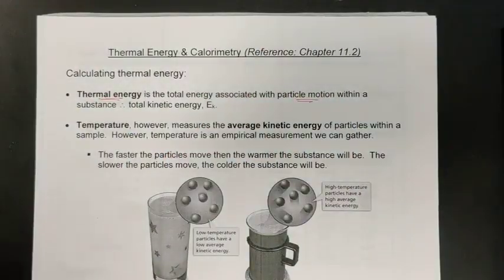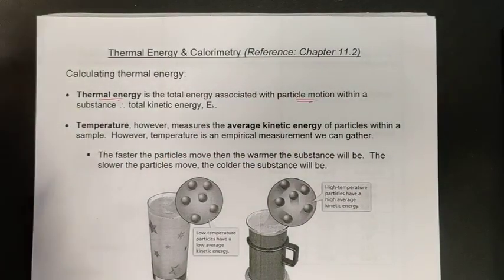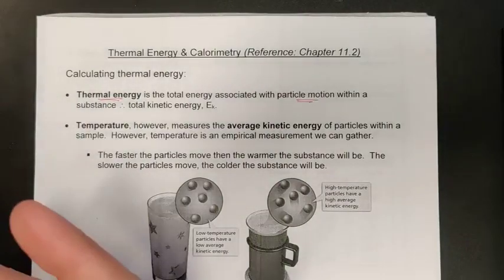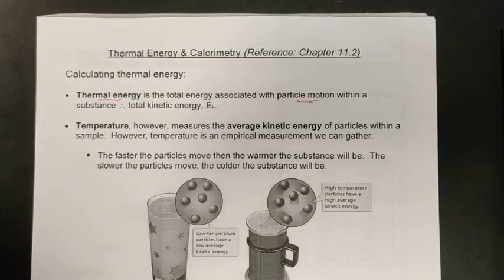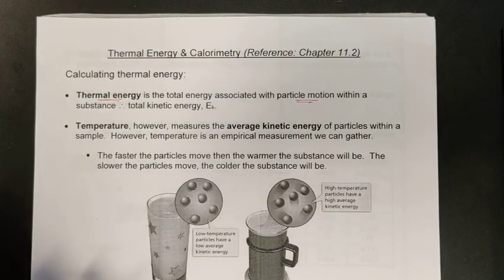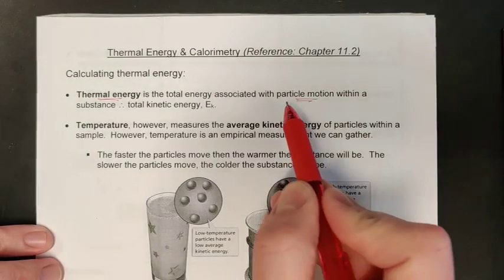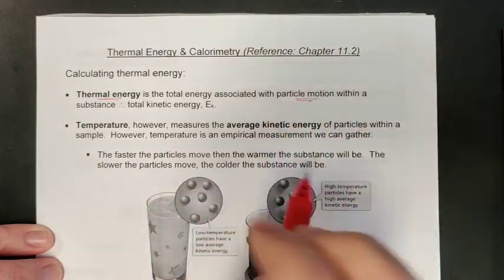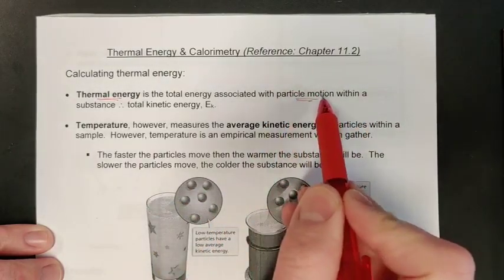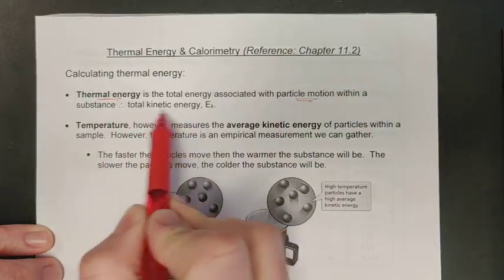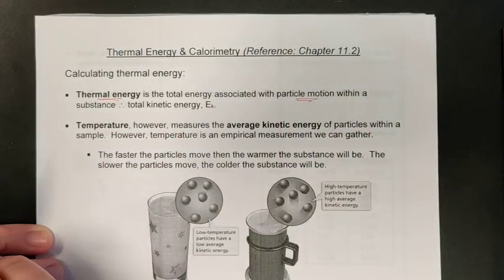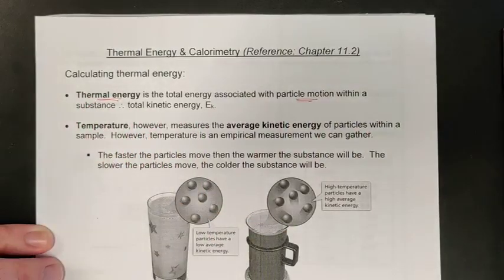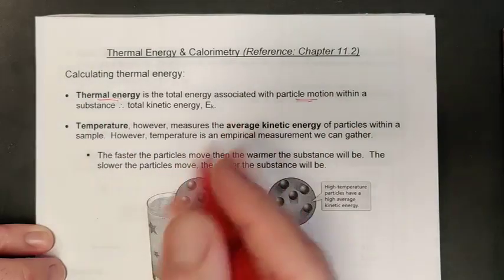When we take a look at the particles that are moving, we know that particles in cold situations move slowly and particles in warmer situations move more quickly. This is a measure going back to science 10 where we're talking about kinetic energy. If we were able to take a look at every single particle, be it atom or molecule, in a sample and measure its speed, we could figure out its total kinetic energy.